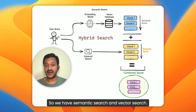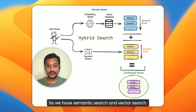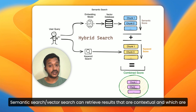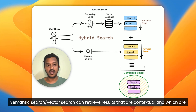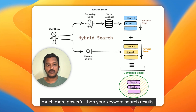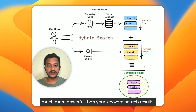So we have semantic search and vector search. Semantic search and vector search can retrieve results that are contextual, and which are much more powerful than your keyword search results.